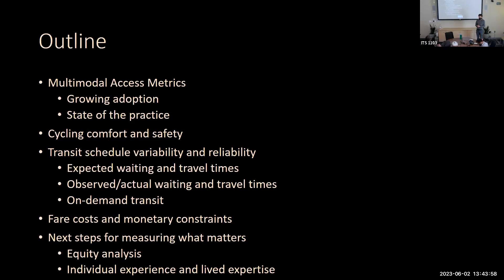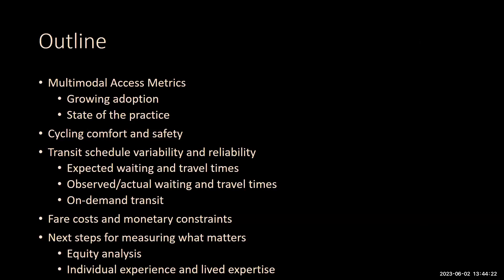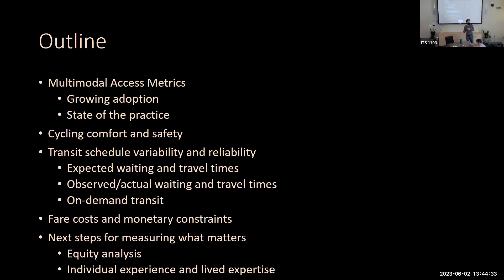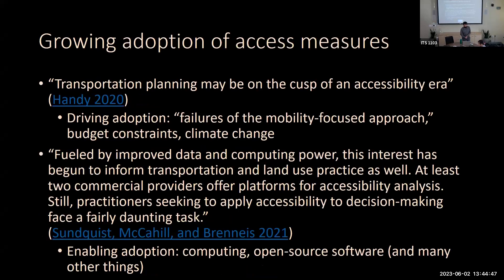First, on multimodal access methods: at the end of last quarter you heard from Henry and his colleague from Caltrans about how Caltrans is adopting multimodal access metrics. I'll touch briefly on the growing adoption of these metrics and walk through what I think is the state of practice being adopted. Then I'll get into some dimensions beyond the basic travel times used in state-of-practice access metrics, covering cycling comfort and safety, transit analyses, and fare cost and monetary constraints, with ideas for future research in each section.